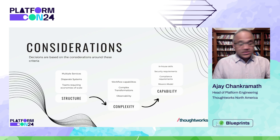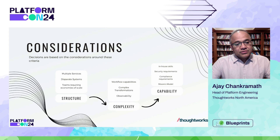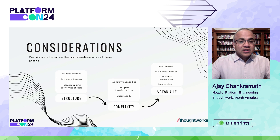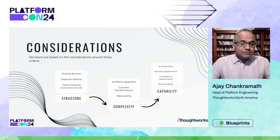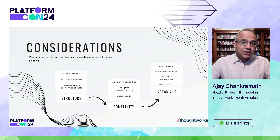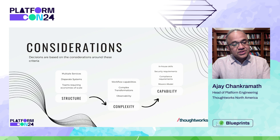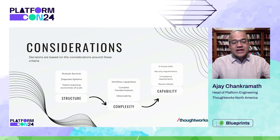What are the considerations when looking at a decision tree? Three things: number one, the structure; number two, the complexity of the work; third, the capability of the teams. From a structural point of view, you're looking at: are there multiple services it is supporting? If you have a very small organization not dealing with tens or hundreds of different microservices, you probably shouldn't be looking at this yet. Are there disparate systems? If so, can you find a solution that brings these systems together? Do you have multiple teams? If so, providing some level of economies of scale is extremely important. Every time I have a conversation about whether an organization is ready to adopt platform engineering, one of the first things to consider is whether there is economies of scale in creating this.